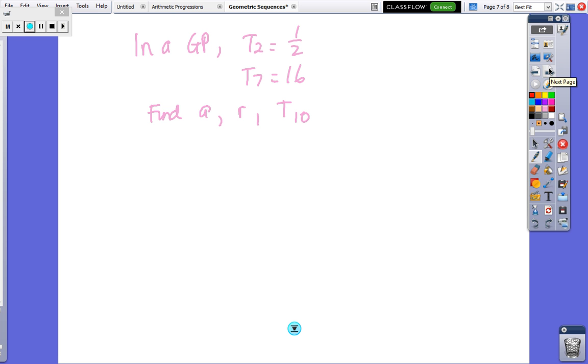This is another sort of question where you're given clues. So we need to find A, R, and then define a random term. So T2 would be AR to the power of 1, and T7 would be AR to the power of 6. That's the first thing you need to work out. And then what we need to do is, like simultaneous equations, we've got two unknowns and we've got two equations, so we can solve them. The trick with these ones is we're going to divide to get rid of the A.